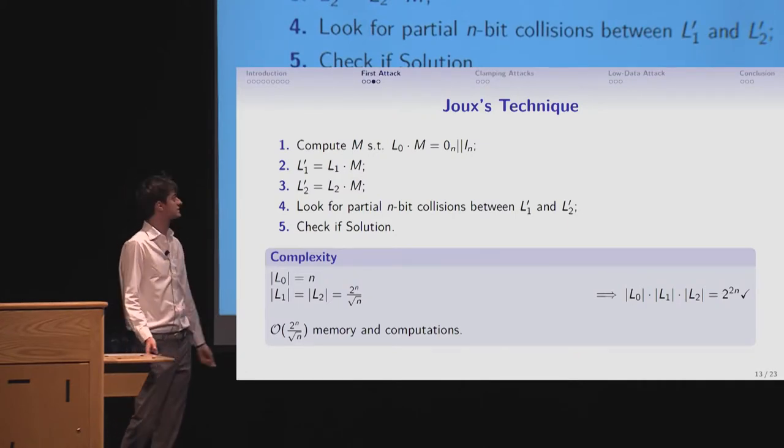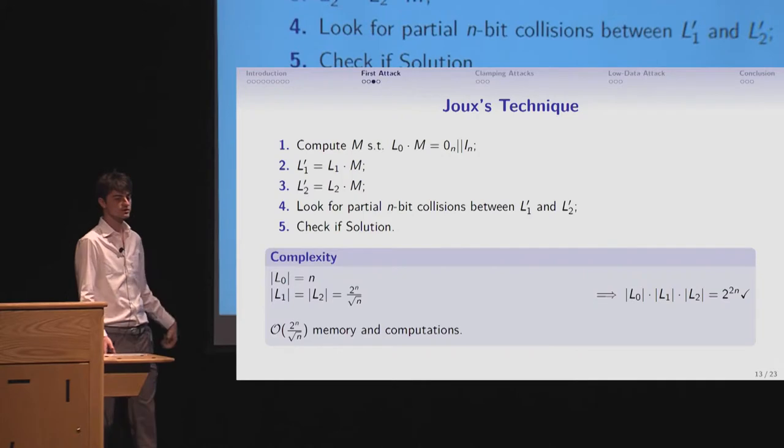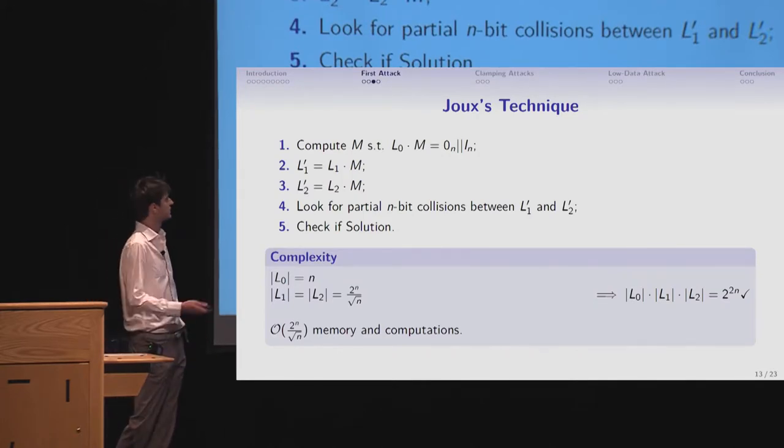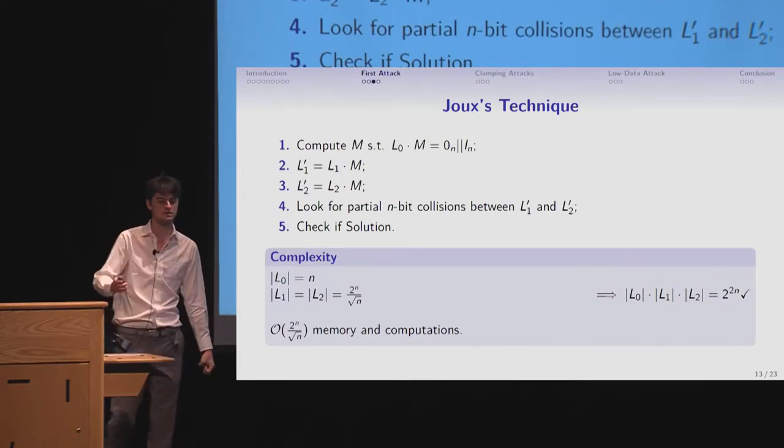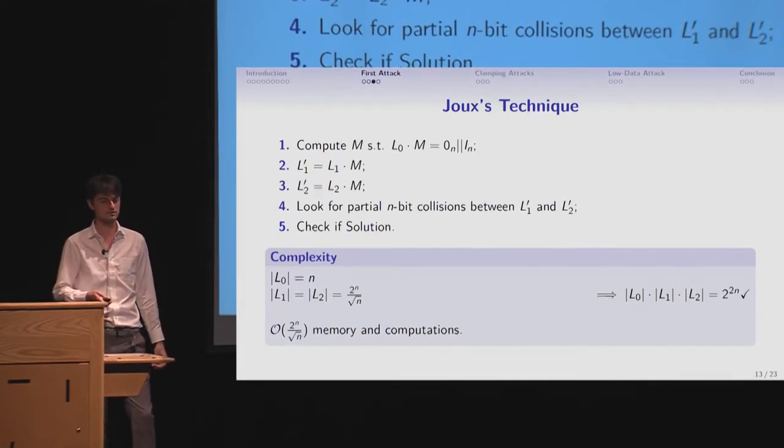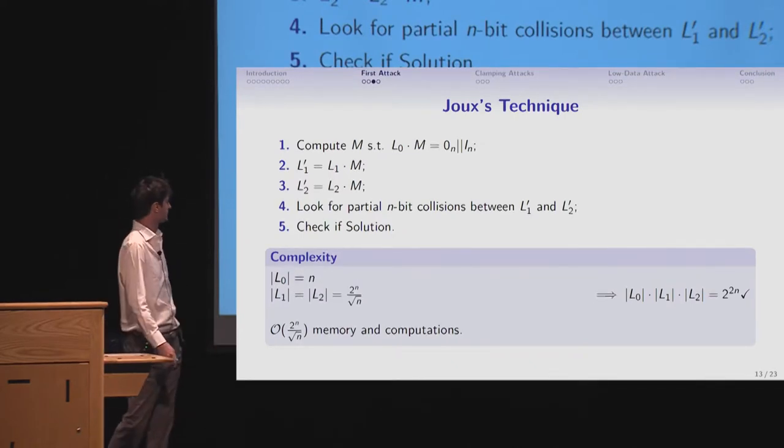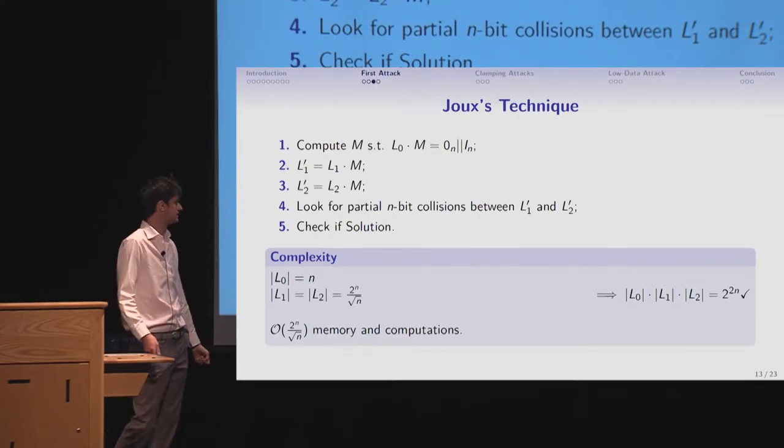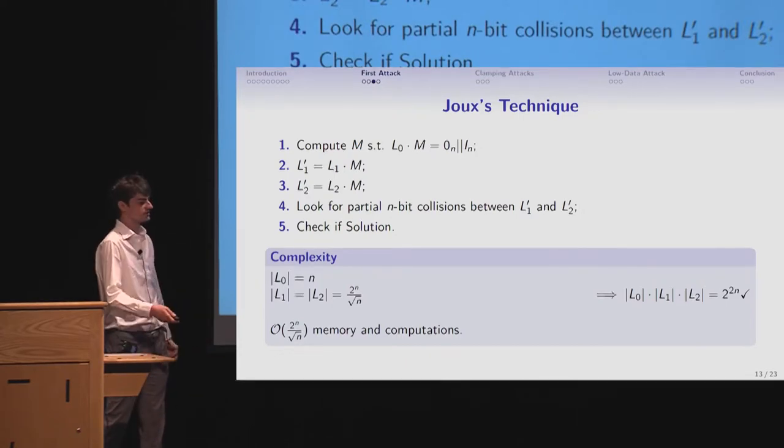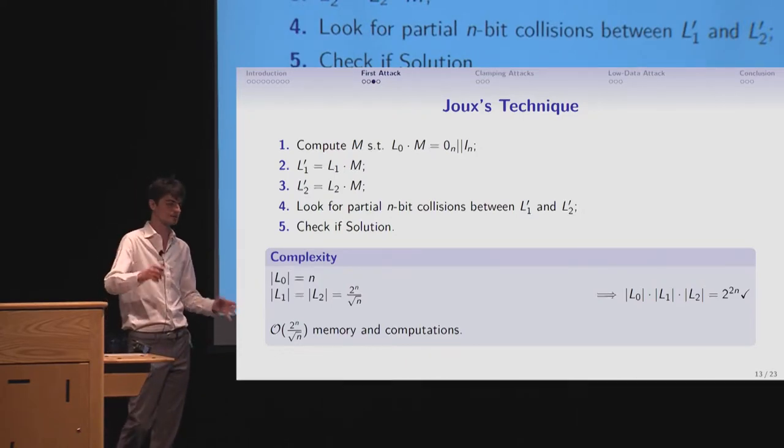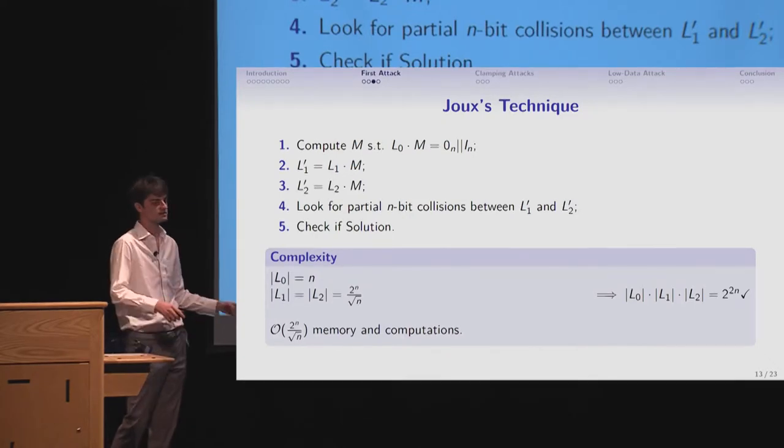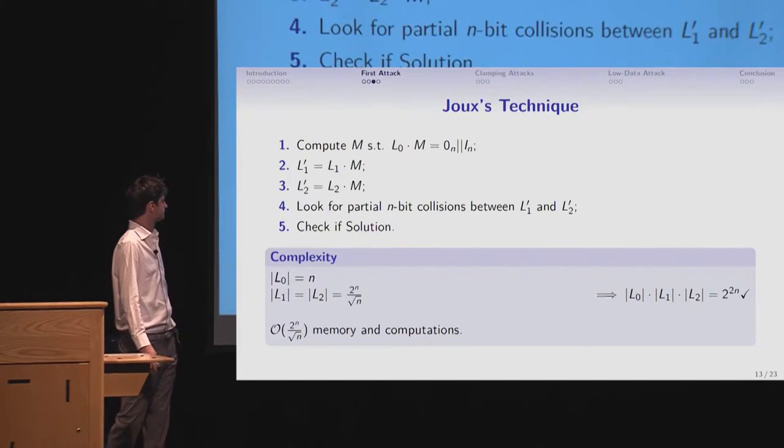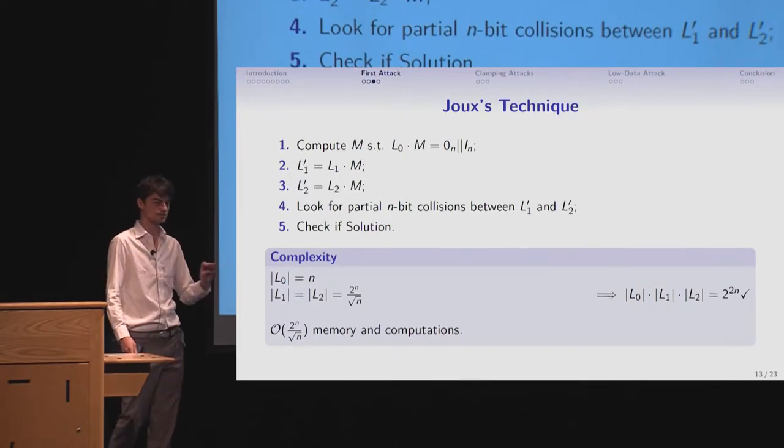So it works like this. Compute the transformation matrix with the first list. And then you transform your two other lists. You look for partial n bits collision between the two other lists. And you check if you have a solution for every partial collision you found. The complexities then is that you have the, you're just going through the biggest list. So you have a complexity memory and computation of 2 to n divided by square root of n. And you have to have those two other lists that big, so that you have at least 2 to 2n triples. Because the first list is limited to n-words.